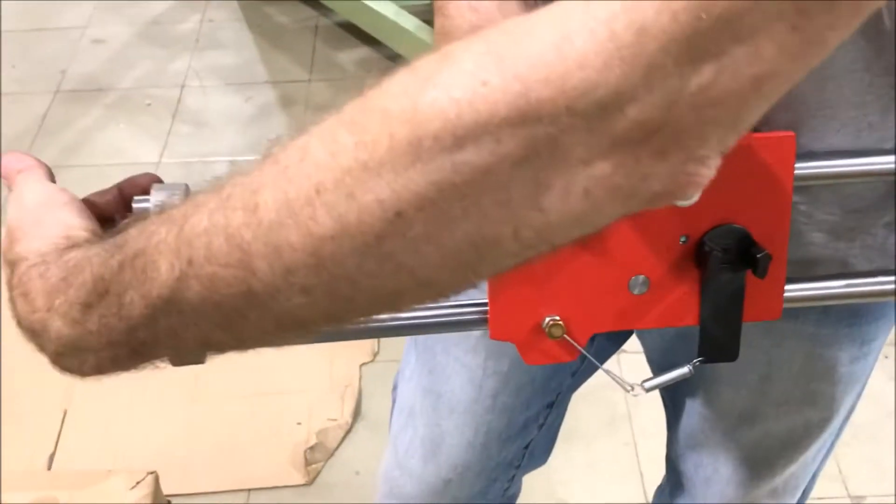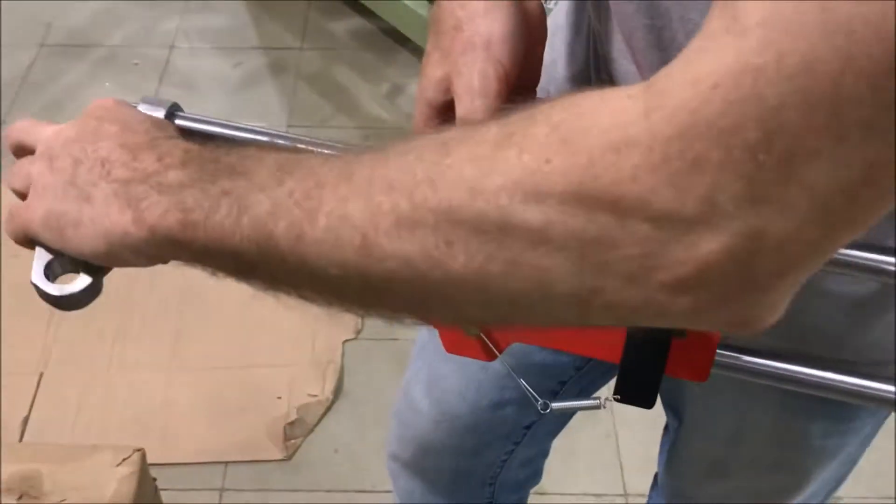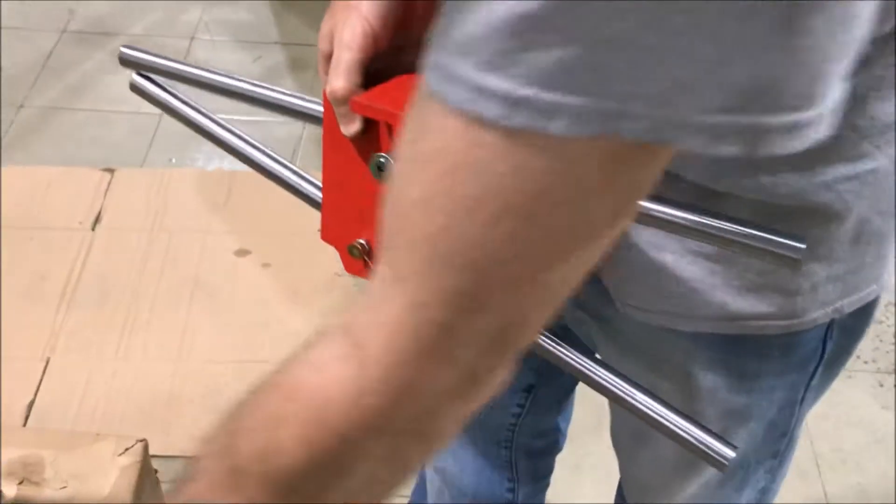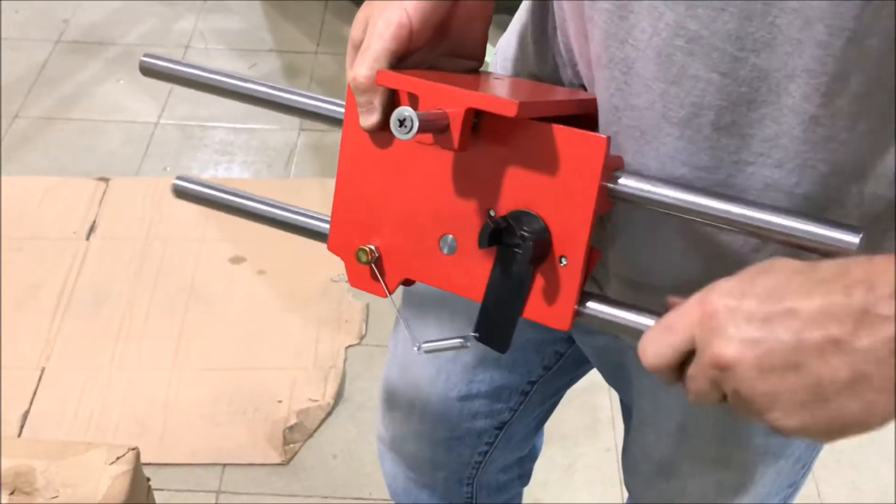And then loosening those set screws, both the end plates can come off. And then your main rails come out.